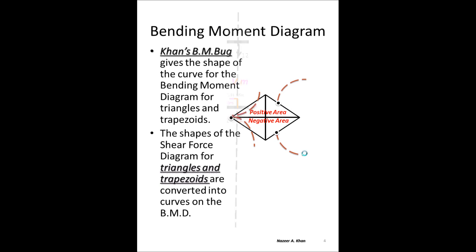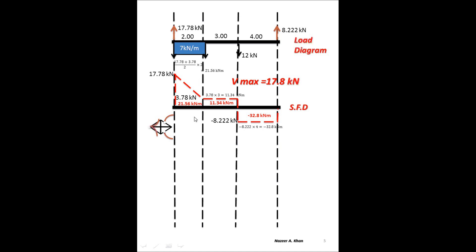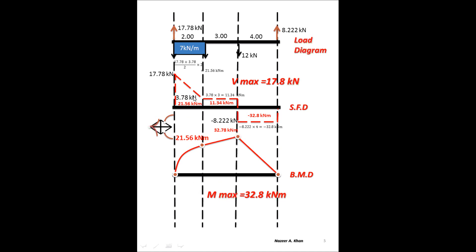Let's construct the bending moment diagram. I've placed the bug at that location to get the appropriate shape for this trapezoid. The trapezoid area is a positive moment, with the right angle oriented so that the matching shape from the bug is a convex rising curve. It rises from zero up to 21.56 kNm. The next shape is a rectangle, which is also a positive moment of 11.34 kNm.